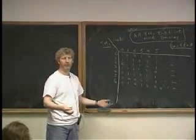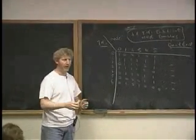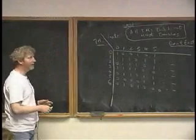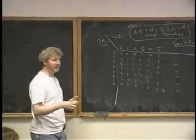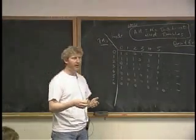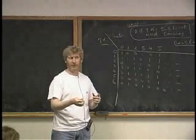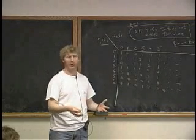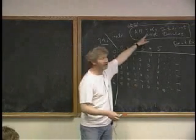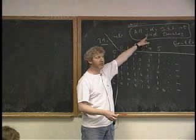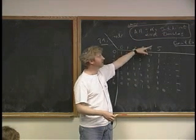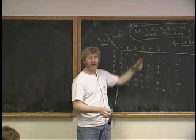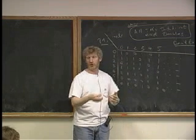The machine accepts that string — there's no way to do it. That problem is not recursive; it's not decidable. Its complement — the set of things that you don't accept themselves — is not even recursively enumerable. So this is not even recursively enumerable, and its complement, the set that do accept themselves, is undecidable but is recursively enumerable.